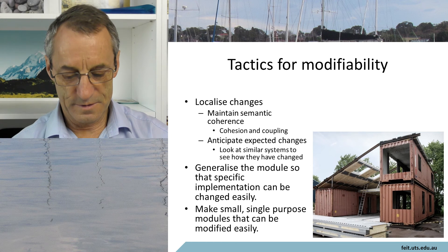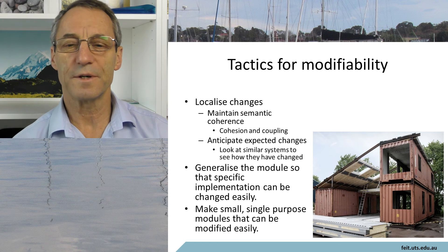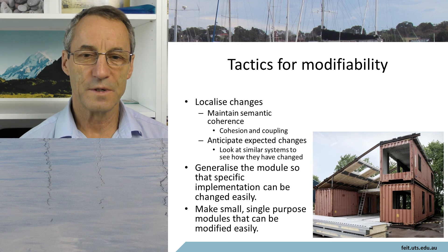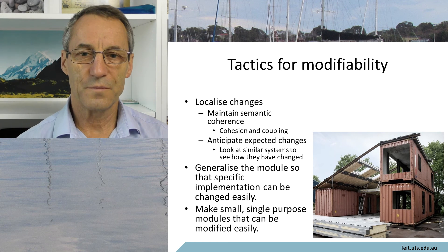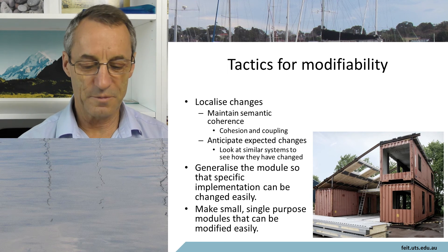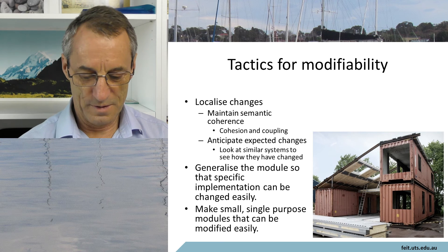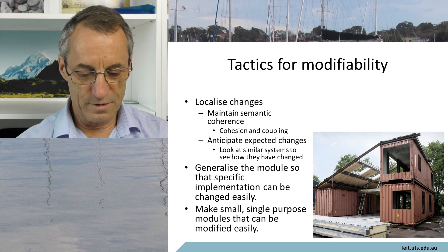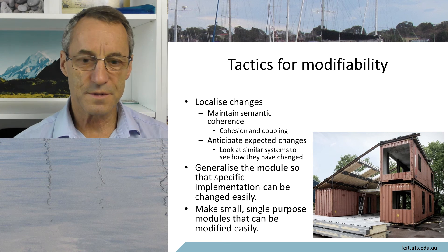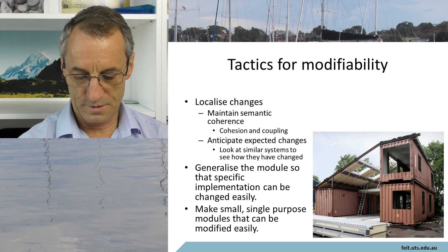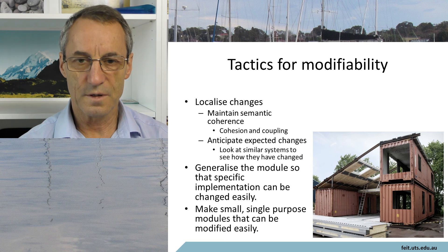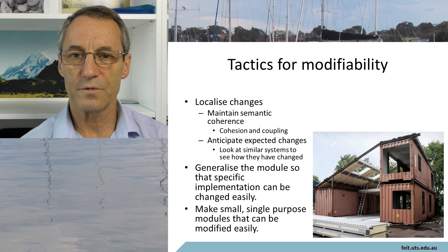Tactics for modifiability — I was trying to get a good picture to illustrate this, which is largely keep things modular. You get the shipping container houses there: it's a standard module, and people are adapting them to all sorts of purposes. So for modifiability, you localize changes, you generalize the module, and you make it small, single purpose, and easy to modify. That seems to be about as good as you can do with modifiability.